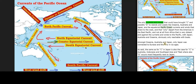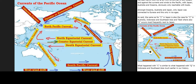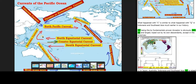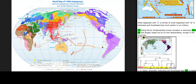Amongst Oceania, Australia and Japan, only Japan was connected to Eurasia and this only in ice ages. As said, the same as for C in Japan is also the case for C in Australia, Indonesia and Southeast Asia and Tibet, where also D occurs most frequently next to Japan. What happened with C is similar to what happened with C in Indonesia and Southeast Asia much earlier in our history.